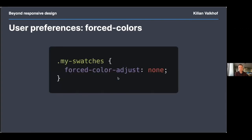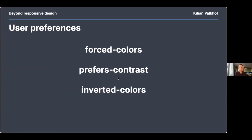If all your colors are changed, what happens when the colors you chose are actually important — for example when showing color swatches for a product in a web shop? You can opt out of forced-colors with a CSS property forced-color-adjust: none, but make sure to use that only for elements where your chosen colors are important, and definitely not for entire pages or sections.